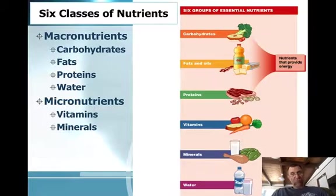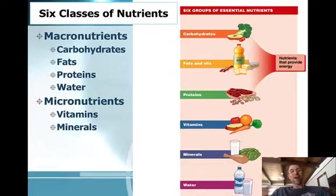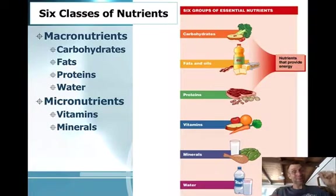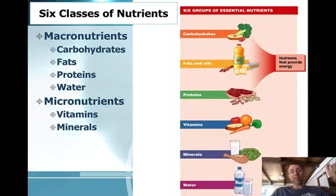The six general classes of nutrients — and some people don't include water, which I think is a shame because it is the most essential of all — are often subcategorized into macronutrients and micronutrients. The macronutrients are those nutrients we need in large amounts: carbohydrates, fats, proteins, and water. Carbohydrates, fats, and proteins provide us with energy. Water does not.